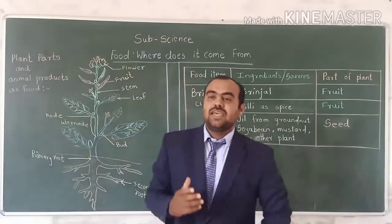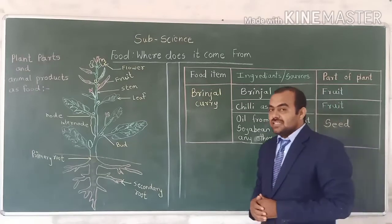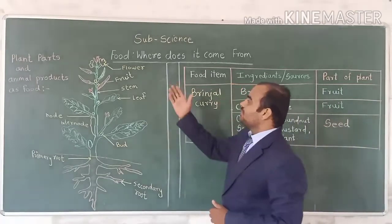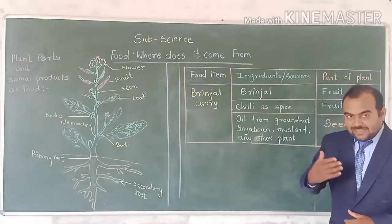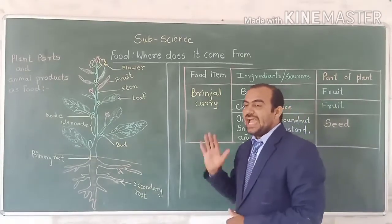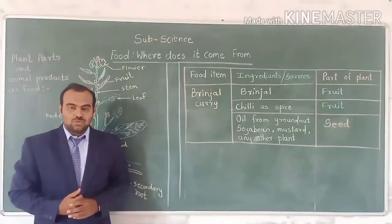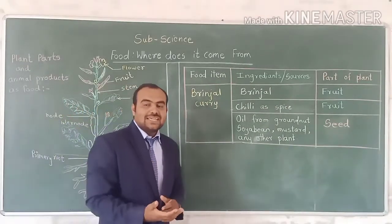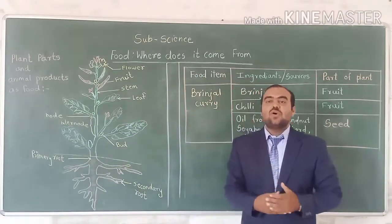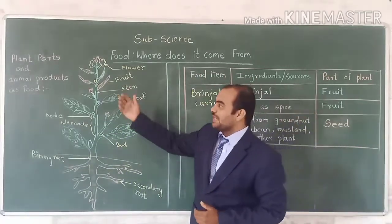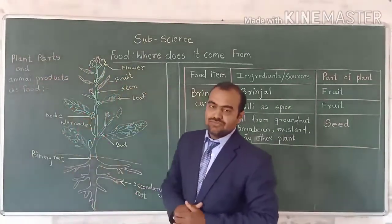Hello friends. In the last video, we discussed about food — where does it come from. In that session, we discussed some points: the variety of food, food material and its resources. Now, we are going to discuss the next point: plant parts and animal products as food.